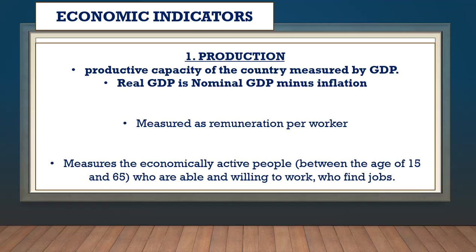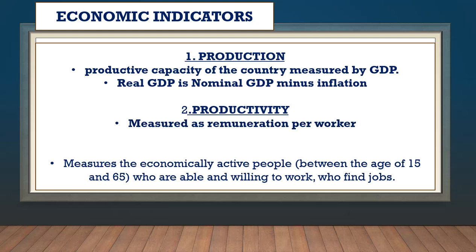The second indicator is the productivity indicator. If you are productive, that means you produce more using the same inputs — more outputs with the same inputs. That's productivity. How is productivity measured? As remuneration per worker. The more productive you are, the more remuneration you earn. So this is how productivity is measured.